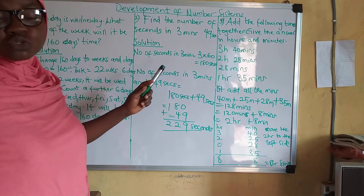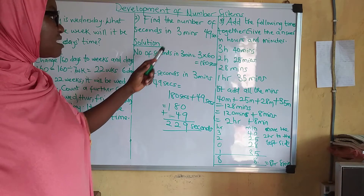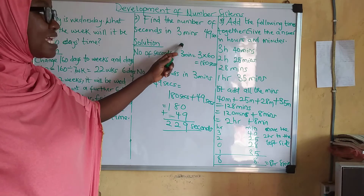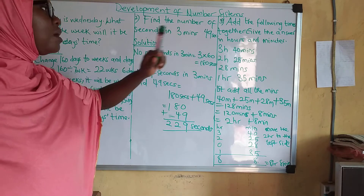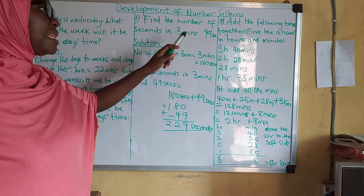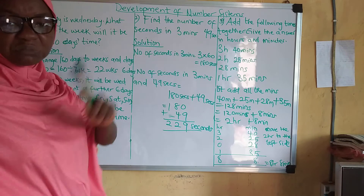Now, what you want to do is find the total number of seconds we have altogether in 3 minutes and 49 seconds. Don't forget that 60 seconds will give us 1 minute.